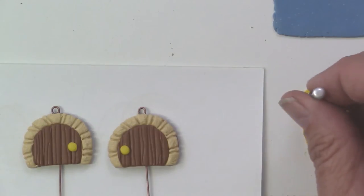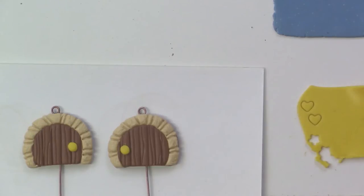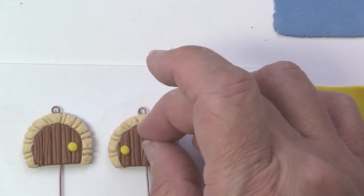I've got my little heart cutter. It's the same size as the star shape, but this is a little heart cutter and I'm going to make little heart windows. I'll get four of those hearts and place those on the door.